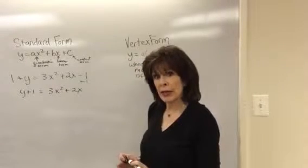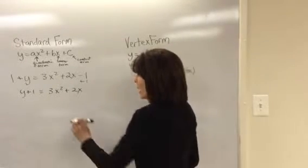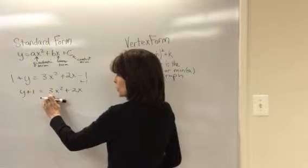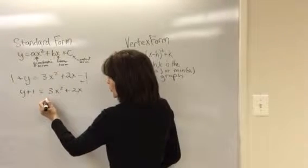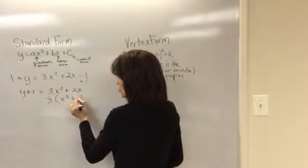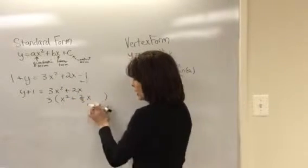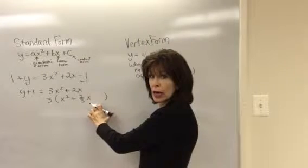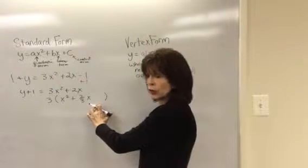Now the next step is to factor out the three so we have no other coefficient besides one here. So we factor out the three and we're left with x squared plus two thirds x, and I left a space here because I want to add the constant term so I can make a perfect square.